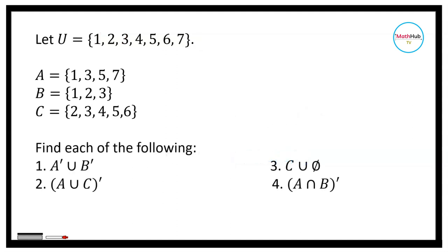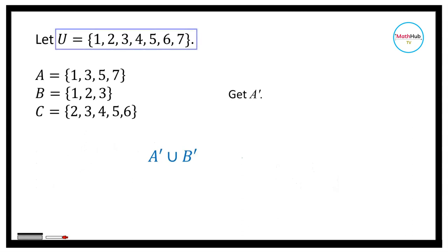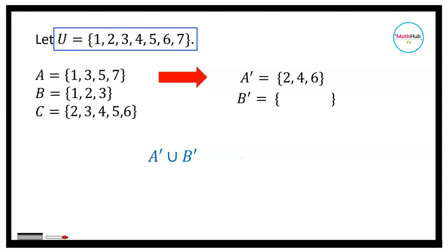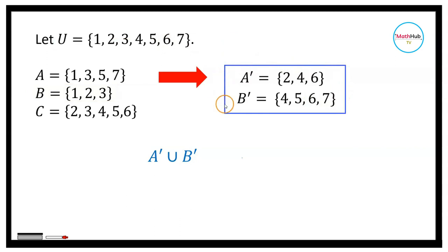For A prime union B prime: first get A prime — elements in the universal set not in A — so A prime is {2, 4, 6}. Then get B prime — elements in the universal set not in B — so B prime is {4, 5, 6, 7}. To get the union, take all elements together, so A prime union B prime is {2, 4, 5, 6, 7}.